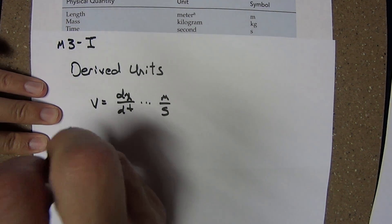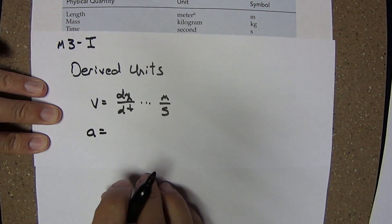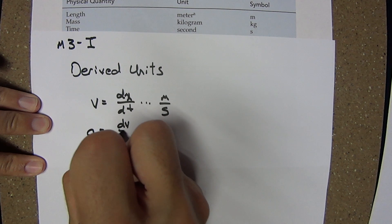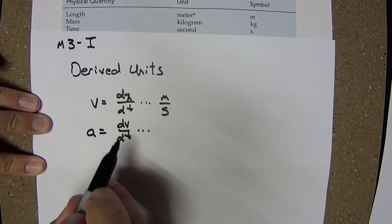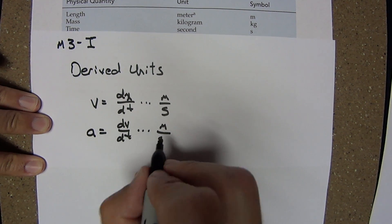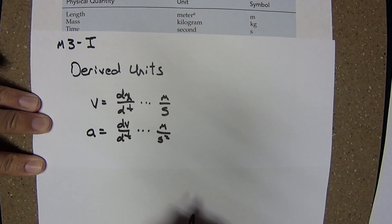An acceleration is the rate of change of velocity with respect to time. It would have velocity, meter per second, divided by another second, or second squared.